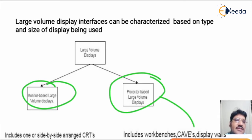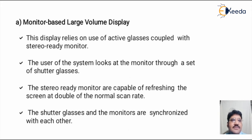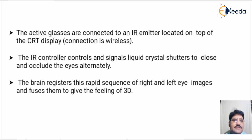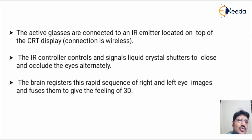When the CAVE is included, a third category is also generated which is the projector-based CAVE input device. Monitor-based large volume display relies on the use of active glasses coupled with a stereo-ready monitor. The user looks at the monitor through a set of shutter glasses. The shutter glasses and the monitors are synchronized with each other. The active glasses are connected to an IR emitter located on top of the CRT display, which are wirelessly connected. The IR controller controls and signals liquid crystal shutters to close and occlude the eyes alternately.